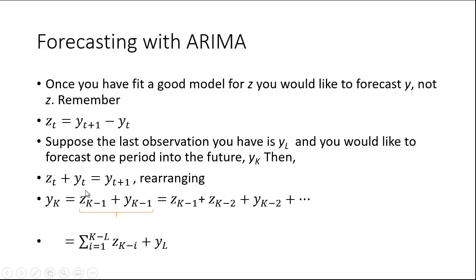Continuing to substitute in for Y_{K-1}, you get plus Z_{K-2} plus Y_{K-2}, and substituting Y_{K-2} gives Z_{K-3} plus Y_{K-3}, and so on. What you end up with is the summation from I equals 1 to K minus L of Z_{K-I}, plus Y_L, the last observation. You don't have to do this manually — any econometric program like EViews will do this for you, but it helps to understand what the program is doing.